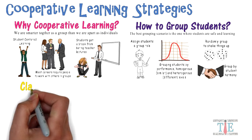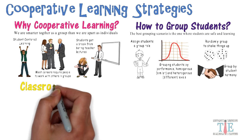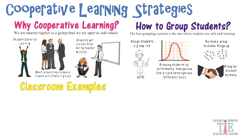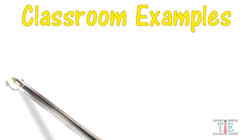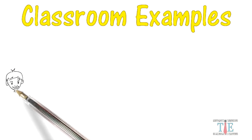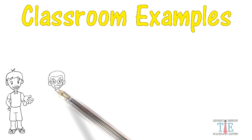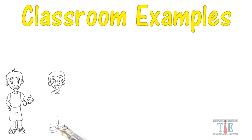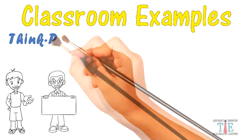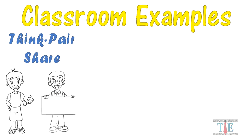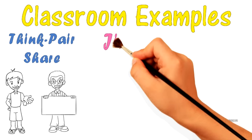Now it's time to look at some classroom examples for our teachers. It should be noted that there are many different strategies. The first strategy is think-pair-share. Students are first given a question to work on, then they are grouped into pairs. Once grouped, they can compare answers and discuss their different perspectives. Sometimes they are asked to come up with a single answer, and then share that answer with the entire class.